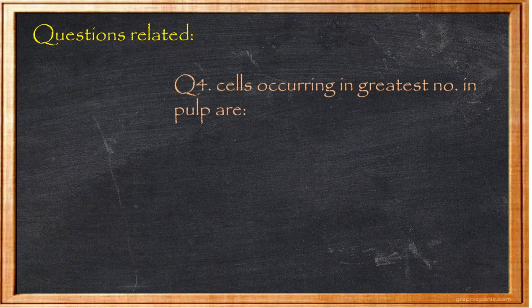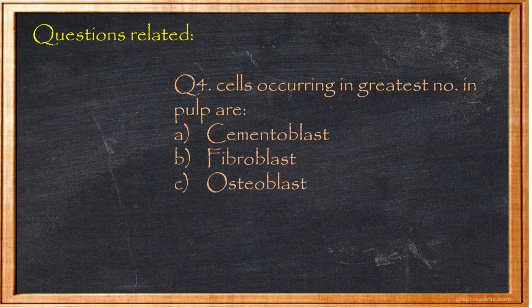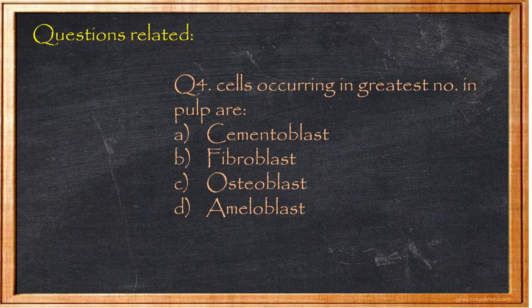Question 4: Cells occurring in greatest number in pulp are — A) cementoblast, B) fibroblast, C) osteoblast, D) ameloblast. As already discussed, this question does appear in MCQs. The most numerous cells in pulp are fibroblasts, and the second most numerous are odontoblasts. Answer: Option B, fibroblasts.